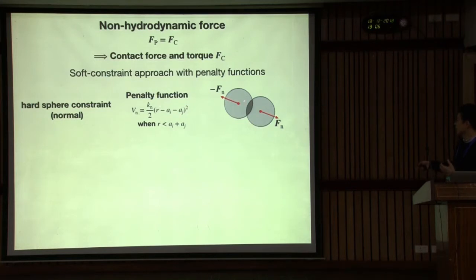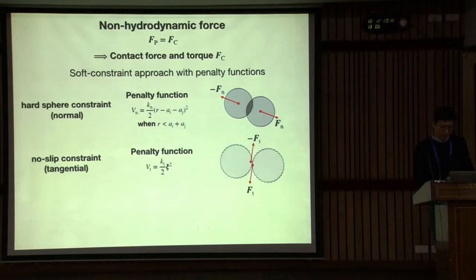In addition, we also add this tangential constraint, the no-slip constraint. This is other contact force. So normal force and tangential force. Penalty function is actually, I track the relative displacement along the tangential direction and stretch some spring. Actually, penalty function is a harmonic potential spring. This way, we can generate normal force and tangential force.